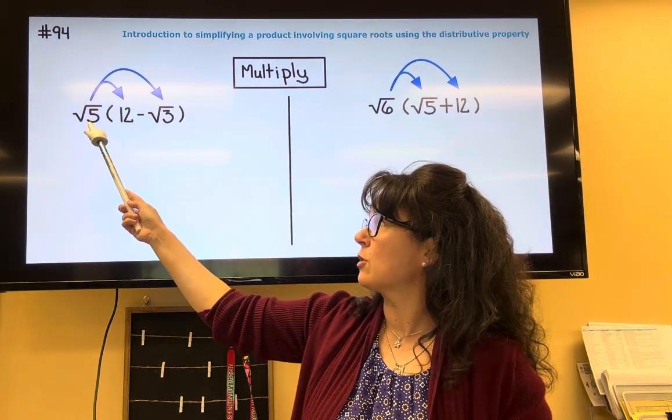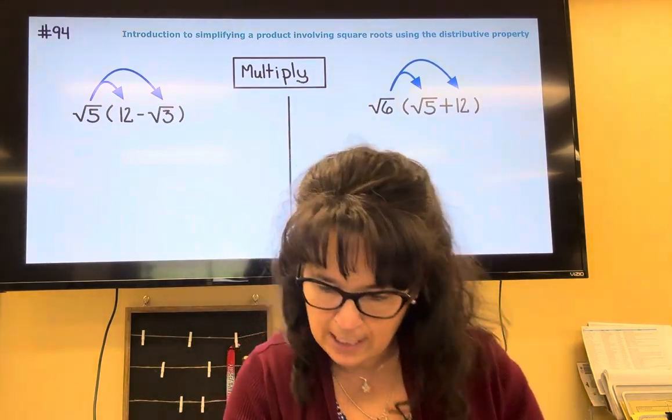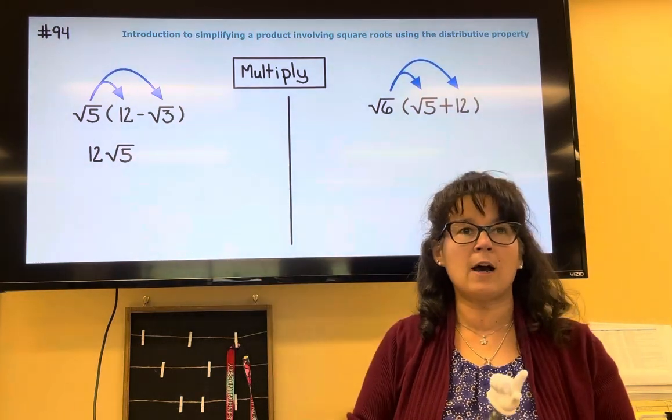When I take the square root of 5 multiplied by 12, when you put things side by side, it shows multiplication. So I have 12 square root of 5.